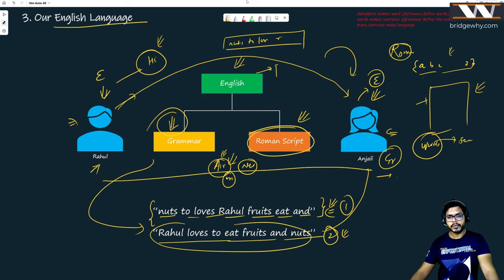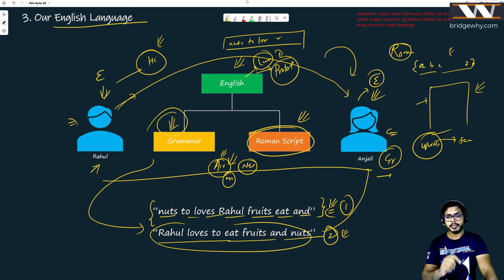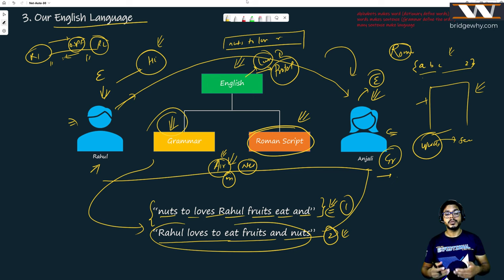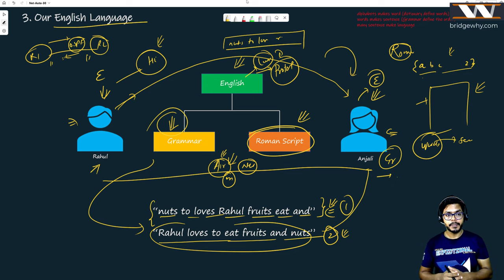English is kind of a protocol — it is a language we all understand, but it has some rules defined by grammar. A protocol also defines some rules. For example, if we have two routers R1 and R2 running OSPF between them, we configure interfaces properly and it is the responsibility of OSPF to bring up the neighborship — because there are rules and regulations in OSPF, and it always obeys them.